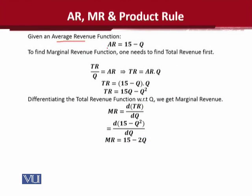We have an average revenue function, the value of which is in front of us. It is 15 minus Q. And if we want to calculate the marginal revenue — because we are trying to understand the relationship between these two functions — what we need to do is to have the total revenue function first, because a marginal function can be calculated only using the original function.